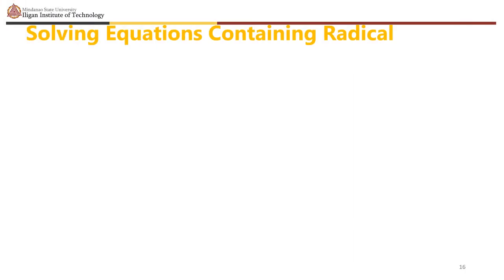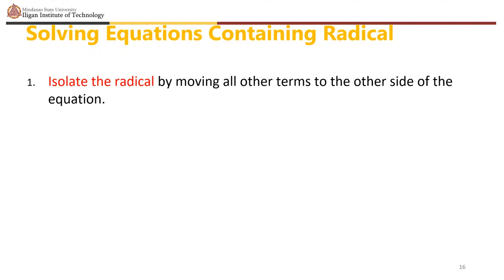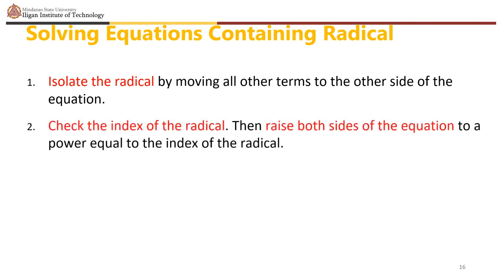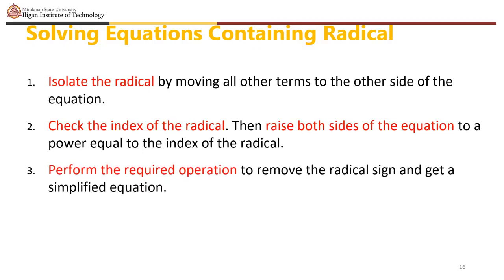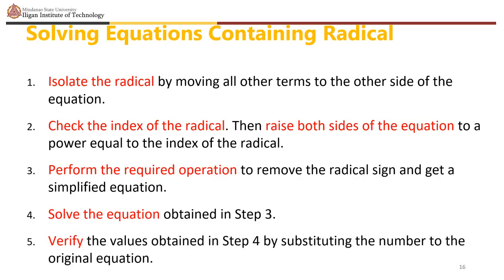Steps to solve equations containing radicals: First, isolate the radical by moving all other terms to the other side. Then check the index of the radical. Raise both sides of the equation to a power equal to the index. Perform the required operation to remove the radical sign and get a simplified equation. Solve the resulting equation. Finally, verify values by substituting into the original equation.